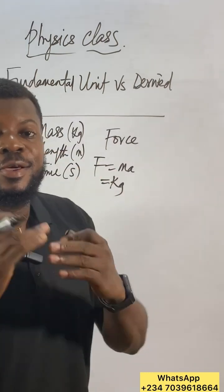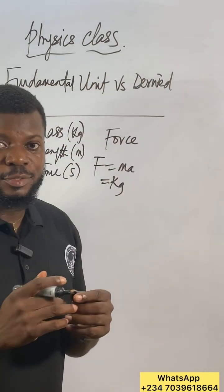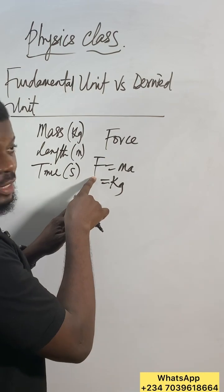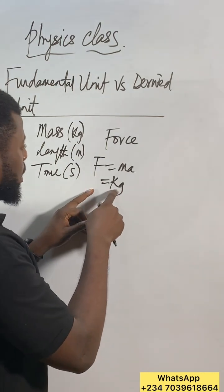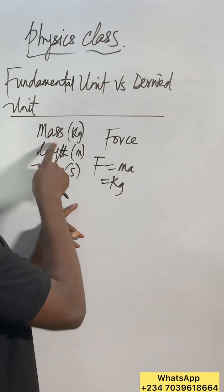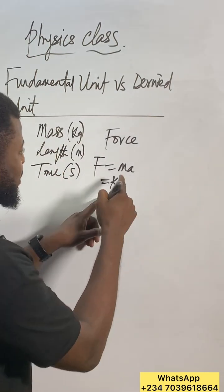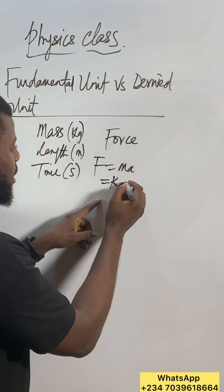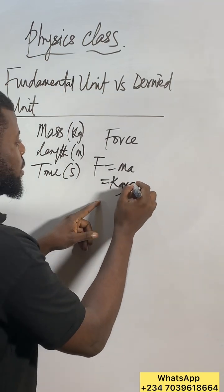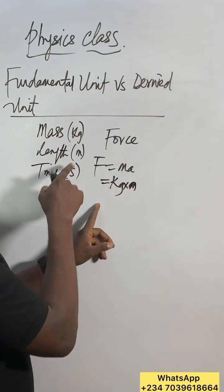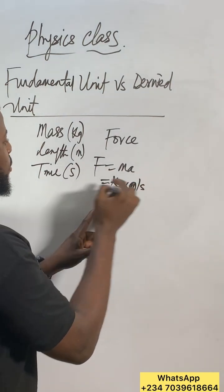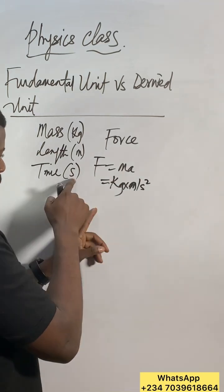For example, this is a derived quantity. To get the unit, I have to borrow from mass - that's kilogram for mass. So mass here is kilogram times acceleration, which is meter per second squared. I borrow everything from the fundamentals.